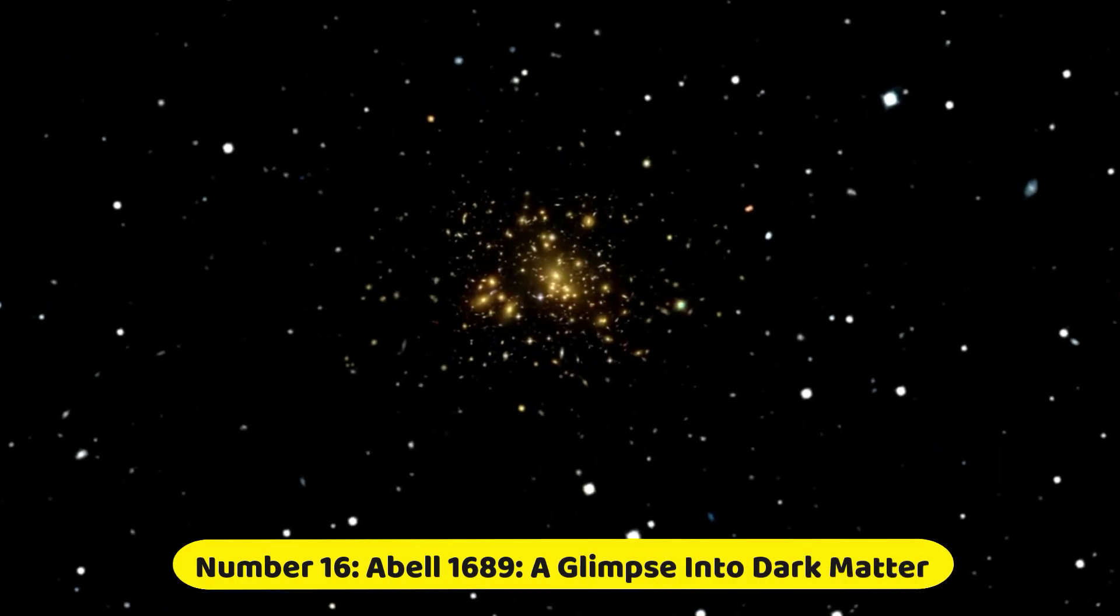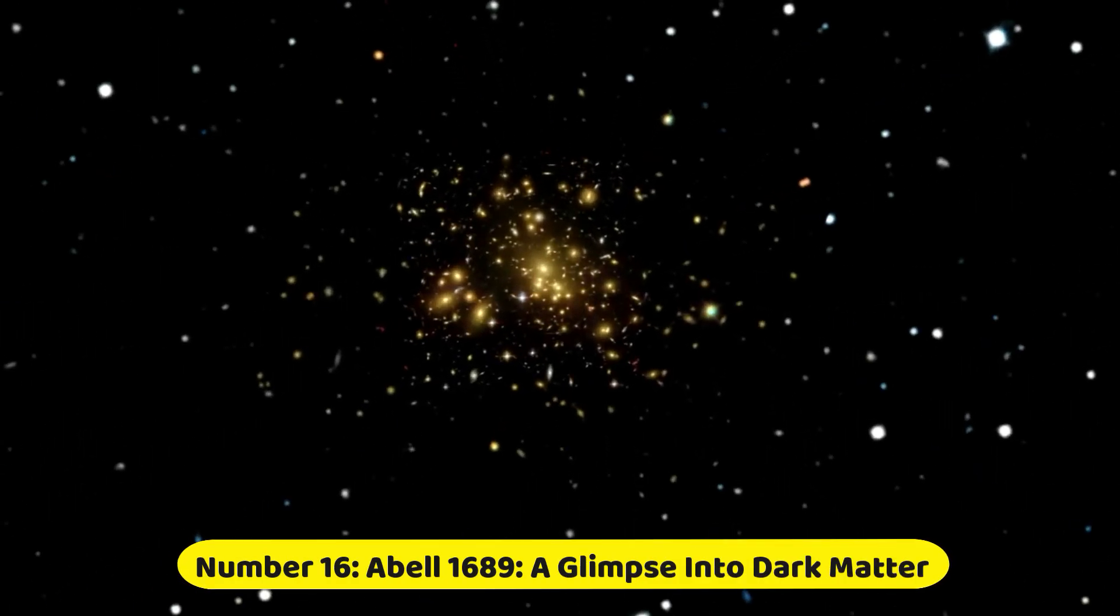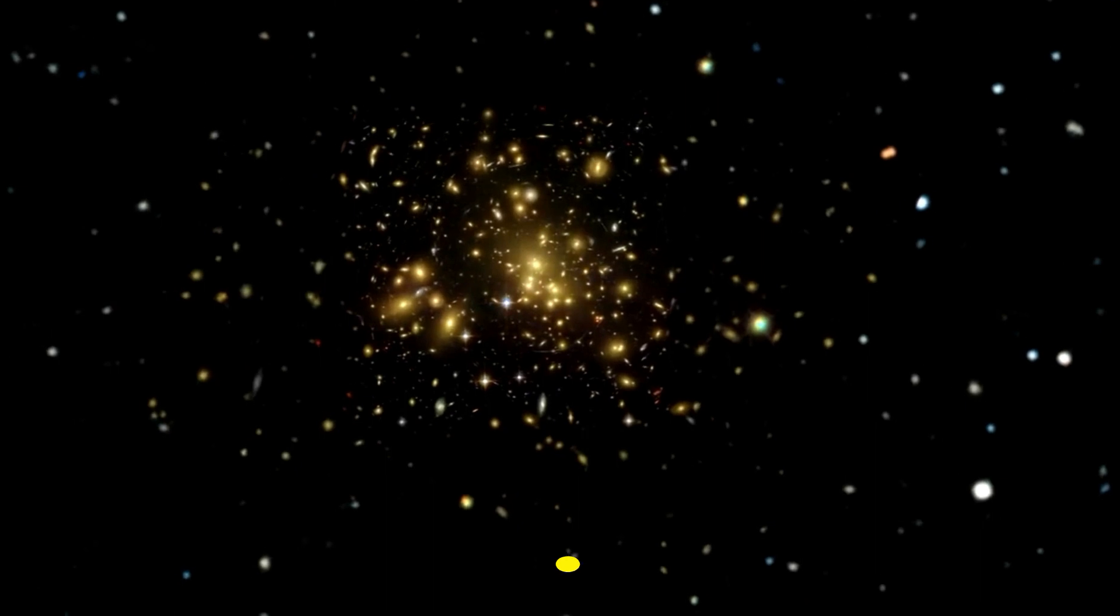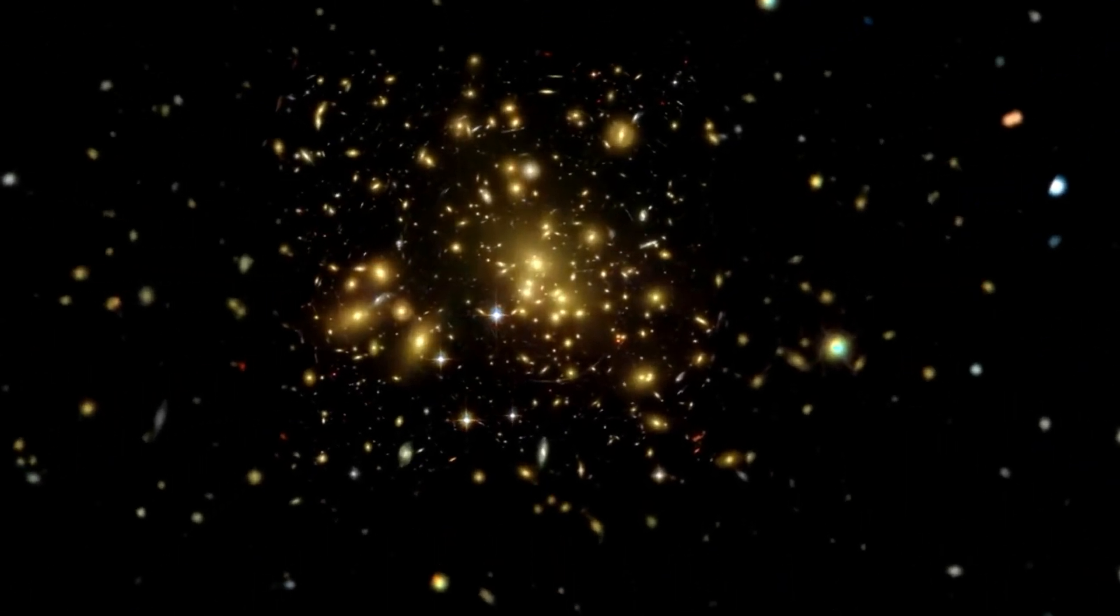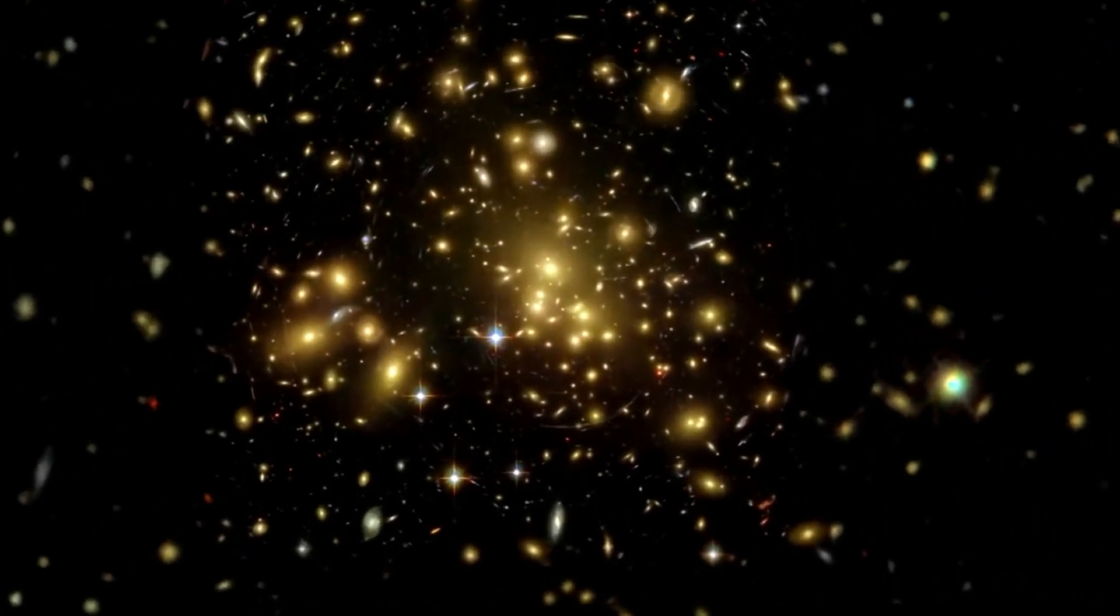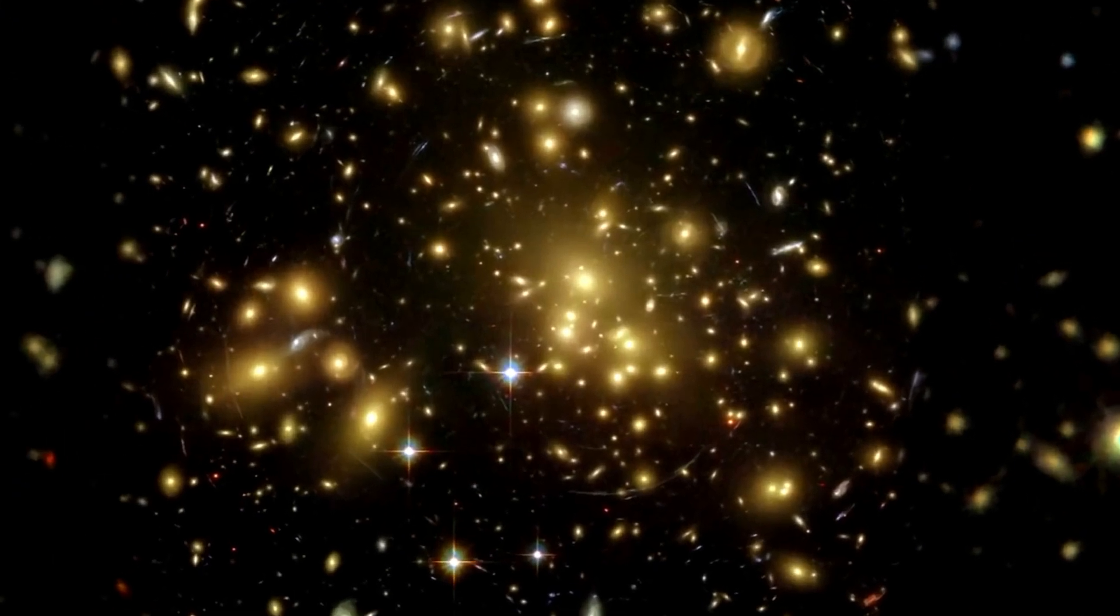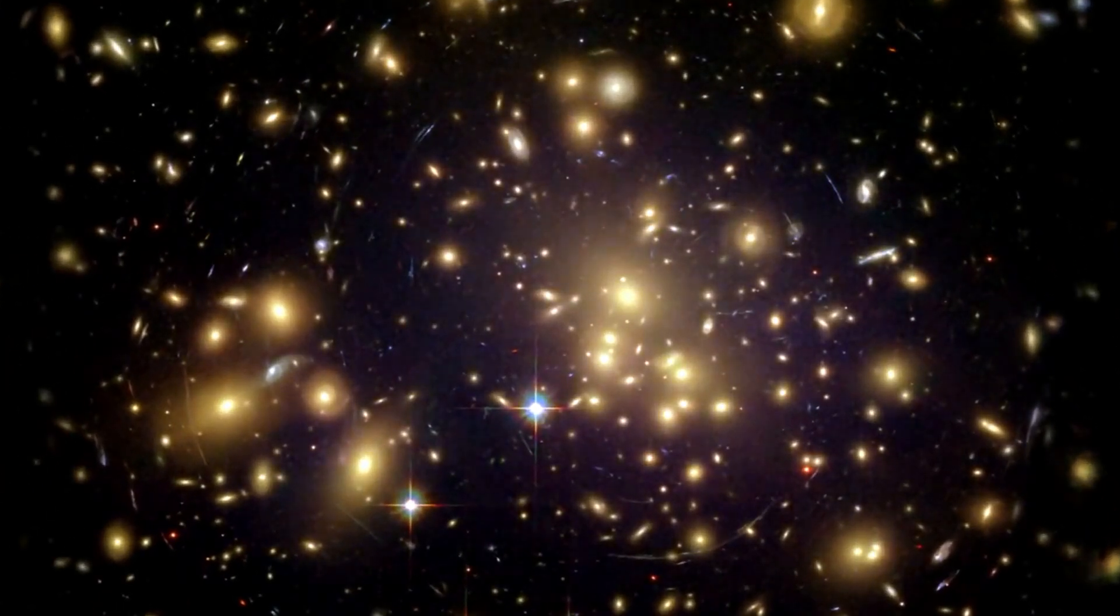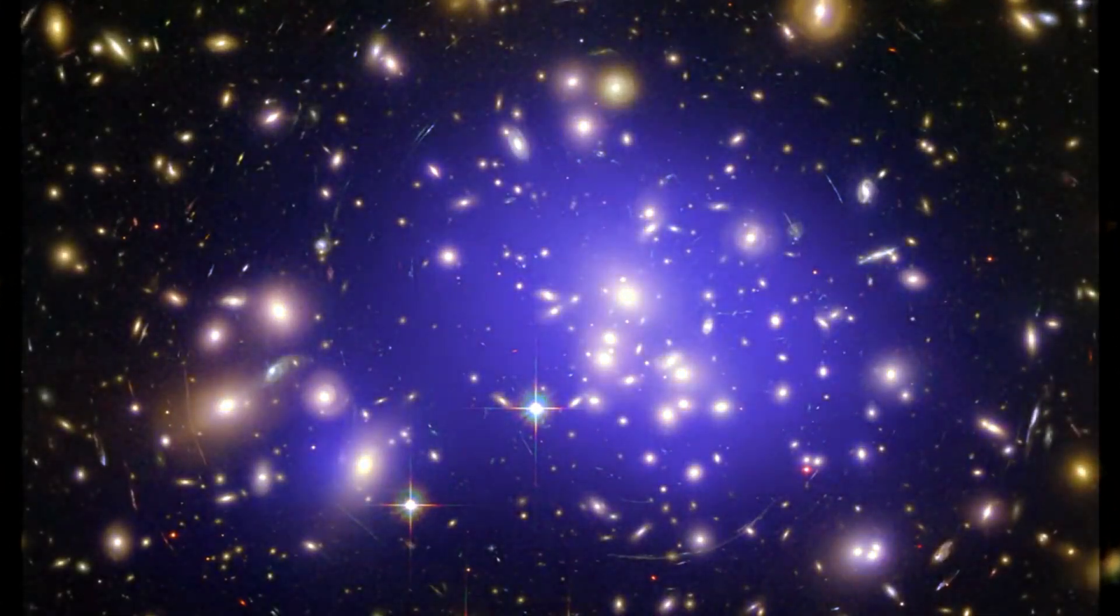Number 16. Abel 1689, A glimpse into dark matter. The NASA James Webb Space Telescope offers a mesmerizing glimpse of the colossal galaxy cluster Abel 1689, housing billions of galaxies and trillions of celestial bodies.